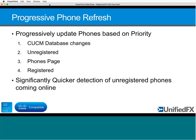This refresh is structured around four priorities, running every minute. First, we look for phones that have changed in the database — such as a phone edit or auto-registration — and those go to the top of the refresh list. Second, we look at unregistered phones: we take a chunk of up to 500 at a time and add them to the progressive refresh to check for state changes.